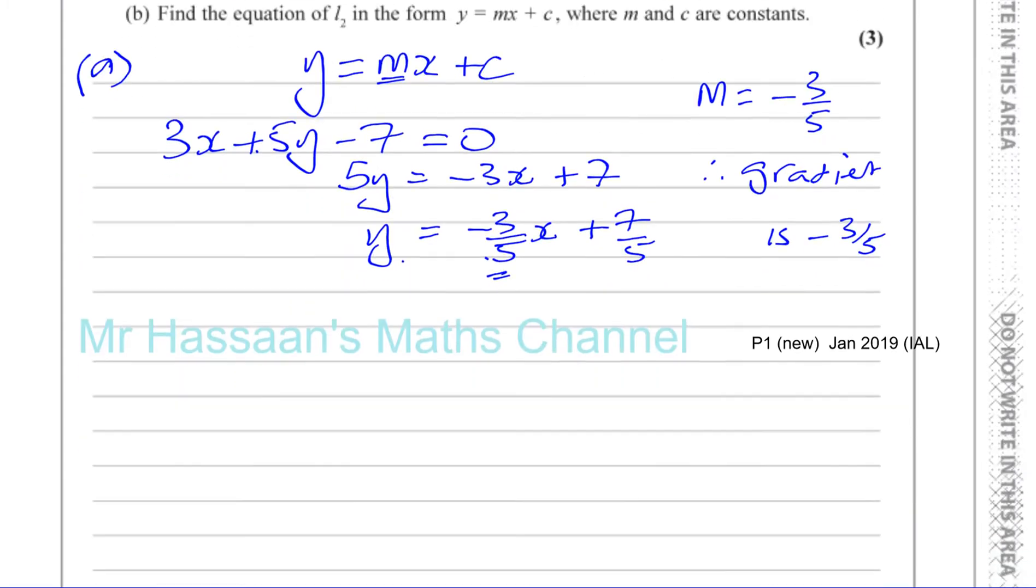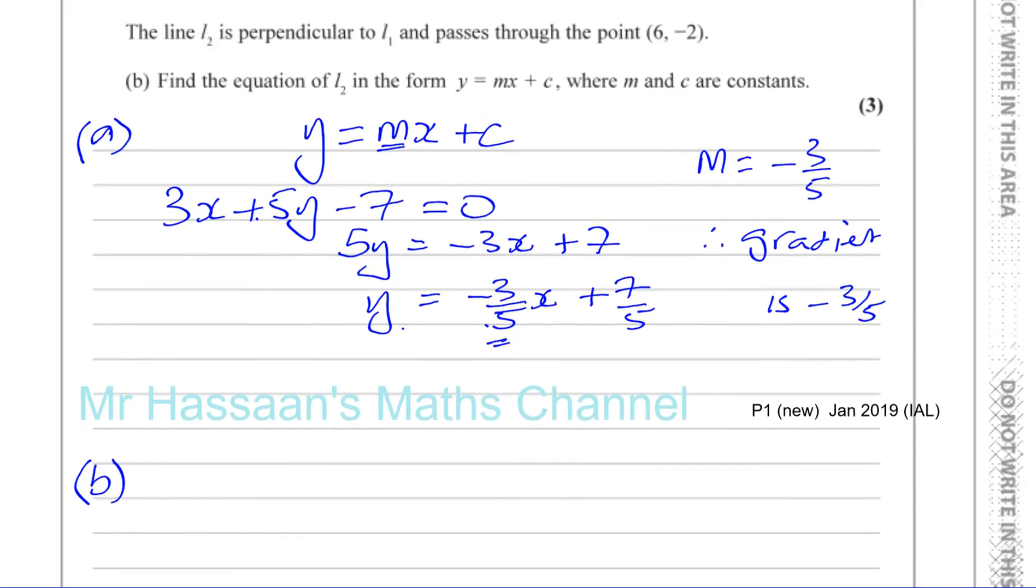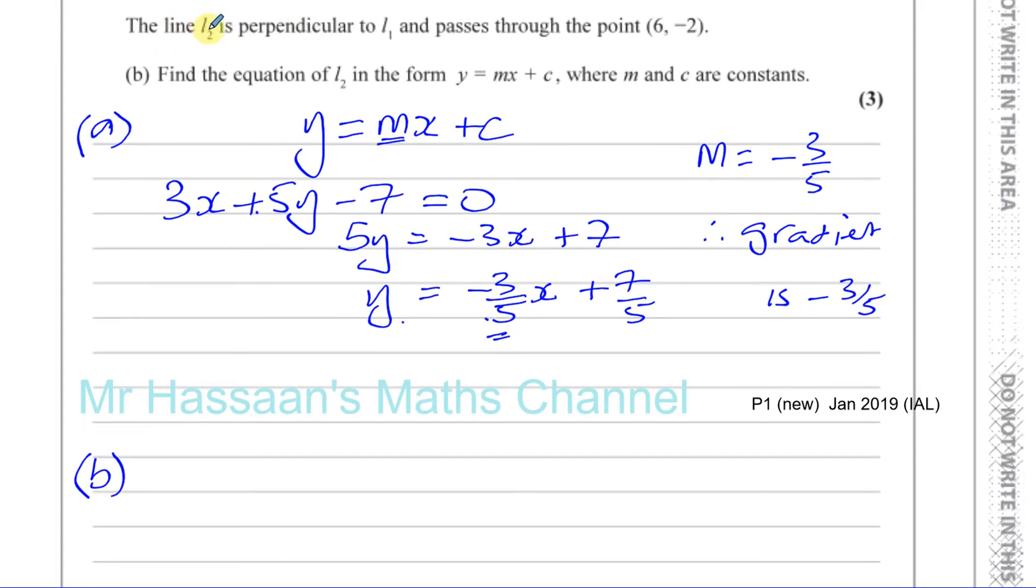And now part b. Part b says find the equation of line l2 in the form y equals mx plus c. What else did they tell us about line l2? They said the line l2 is perpendicular to line l1 and passes through the point (6, -2).